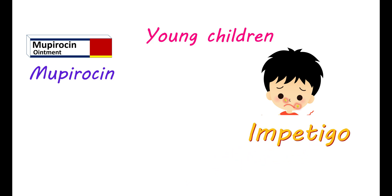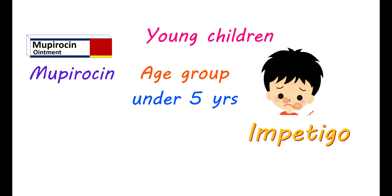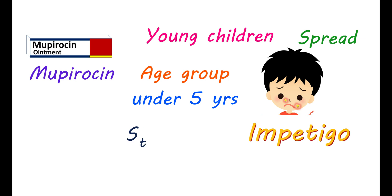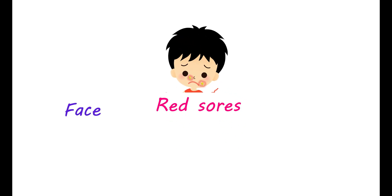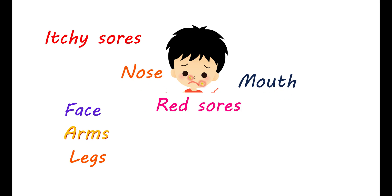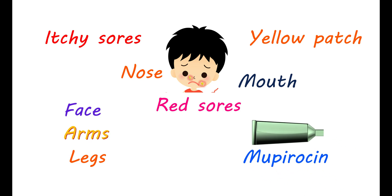Impetigo is a bacterial infection that mainly affects children in the age group under 5 years, and it can easily spread among them. A few types of bacteria like Staphylococcus aureus and Streptococcus pyogenes may cause this infection. It results in the development of red sores on the face, arms, or legs — especially around the nose and mouth. If untreated, they can be ruptured and result in a yellow patch. Mupiracin ointment can be applied topically to treat this condition.